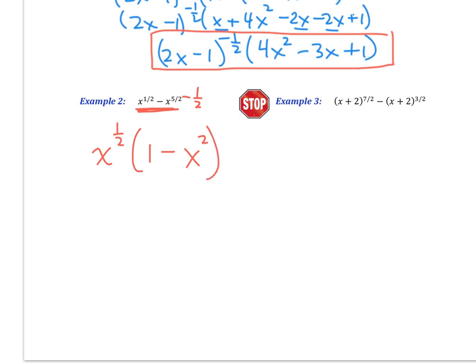And it looks like, if I were to take a look at this, this is the difference of two squares. Which means that I can factor this to x to the 1 half power, and then 1 minus x, and 1 plus x. And so there, that's what I have after factoring that one up.